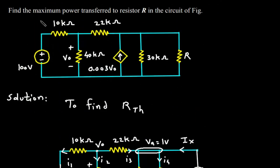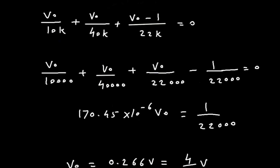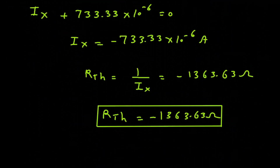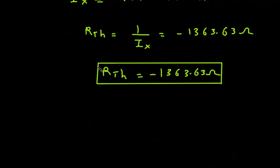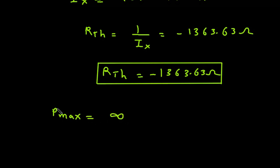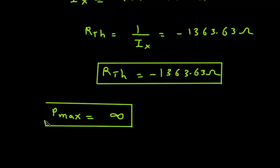We have to find the maximum power transferred to resistor R. Since RTH is negative, Pmax is equal to infinite. This is our final answer.